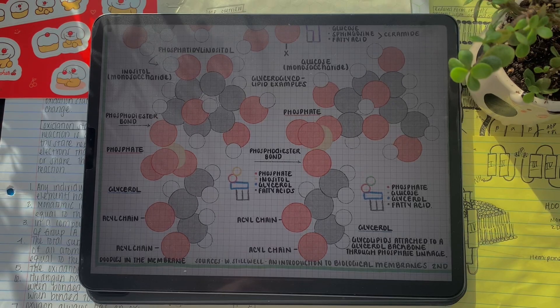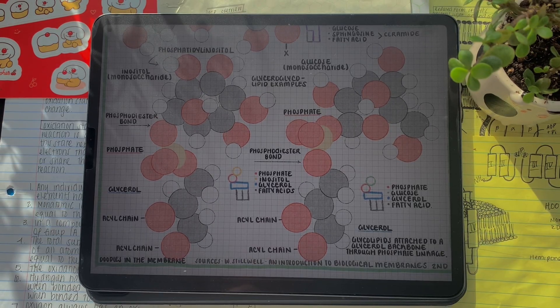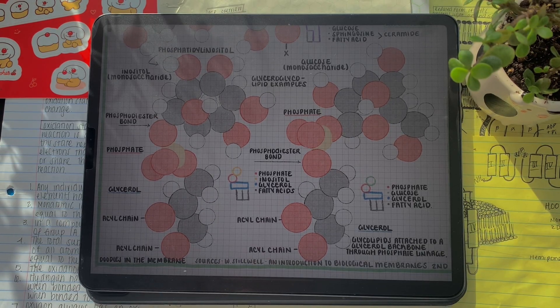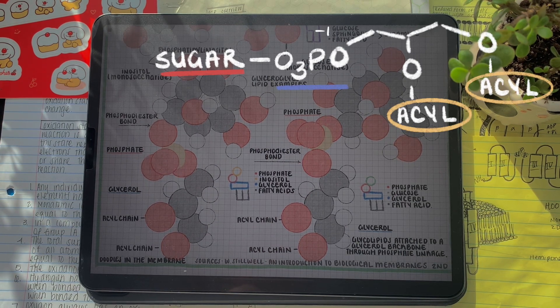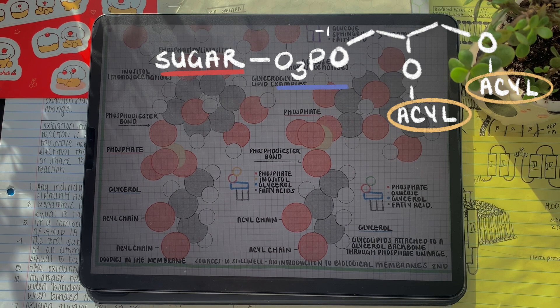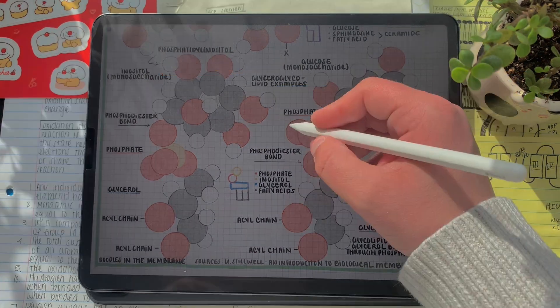Next, let's examine glycolipids that are attached to a molecular backbone, starting with glyceroglycolipids. These lipids have a glycerol backbone with a phosphate on the third carbon position with the sugar attached to a phosphodiester bond.